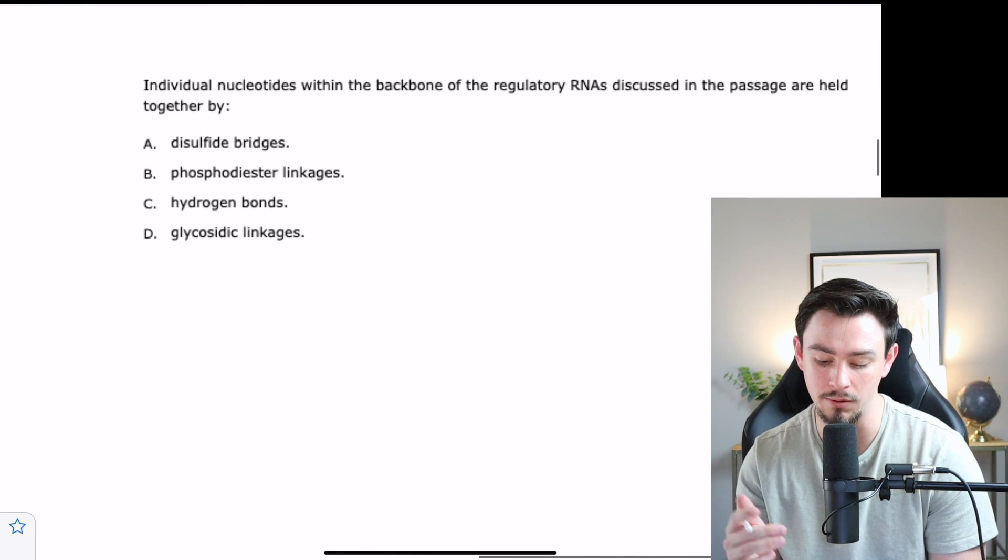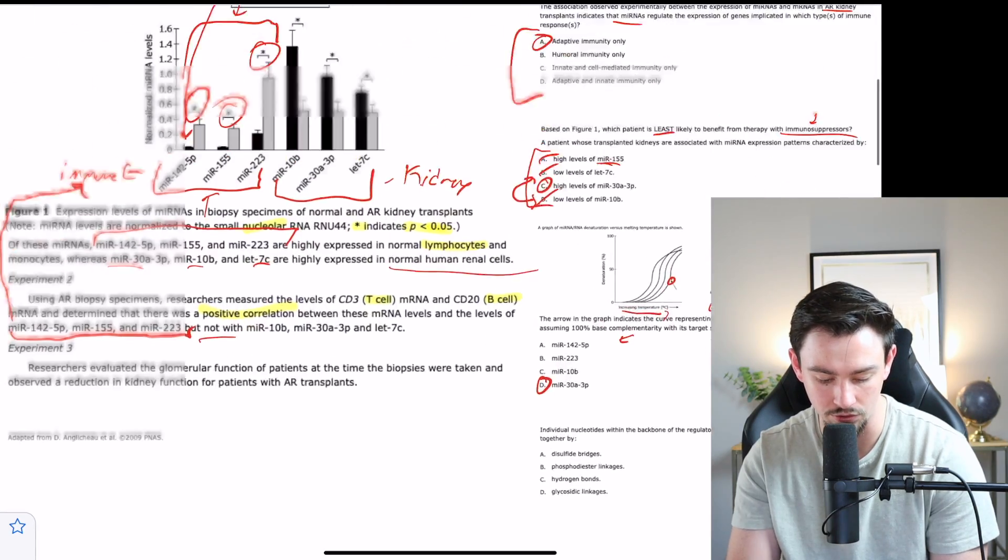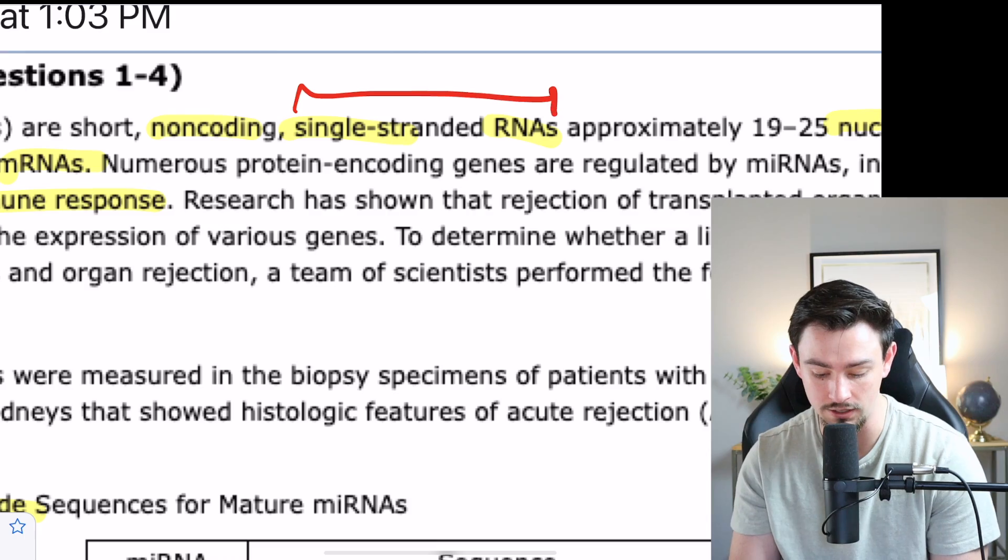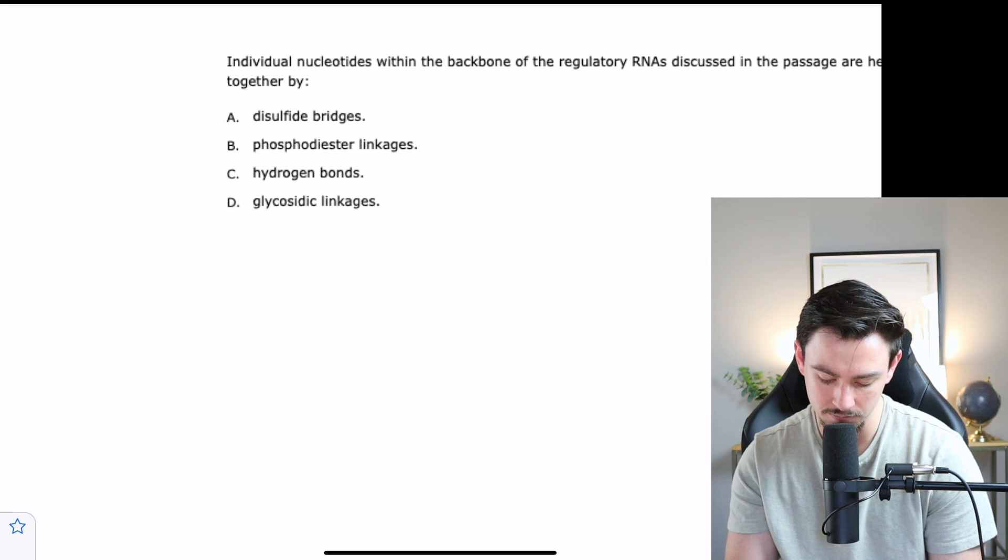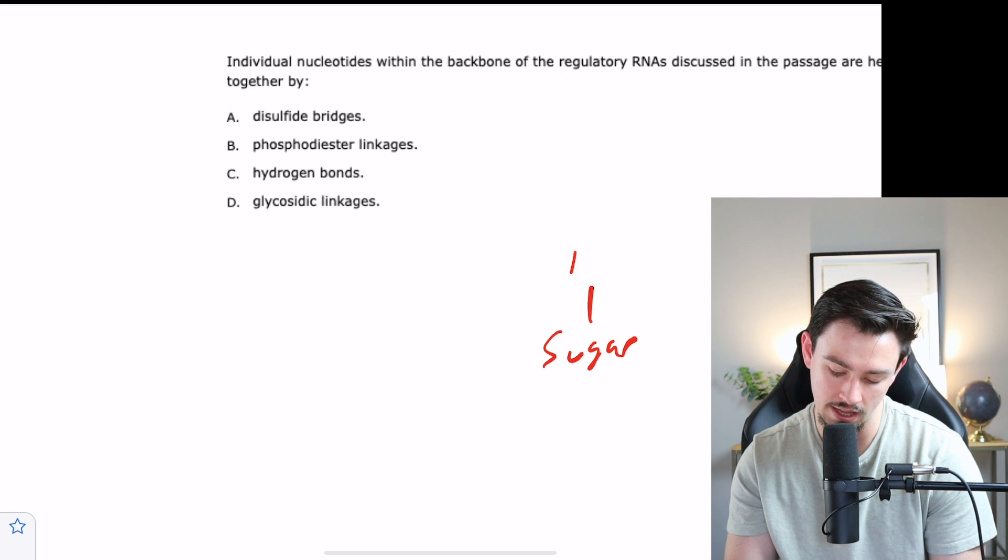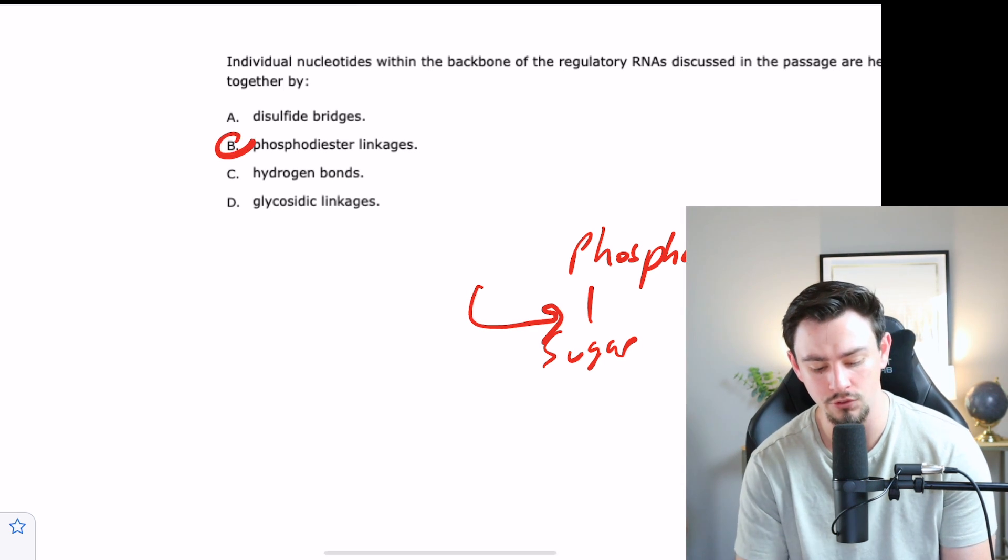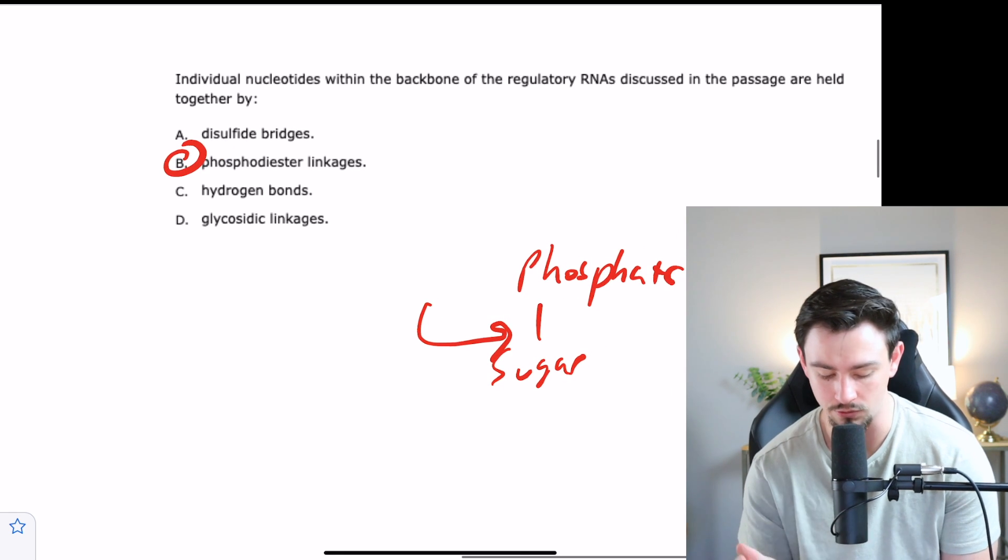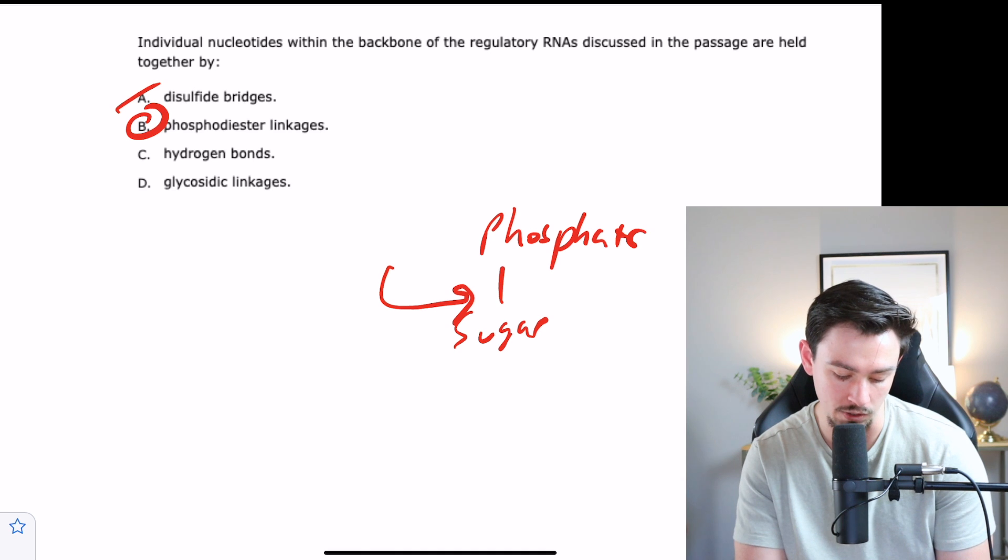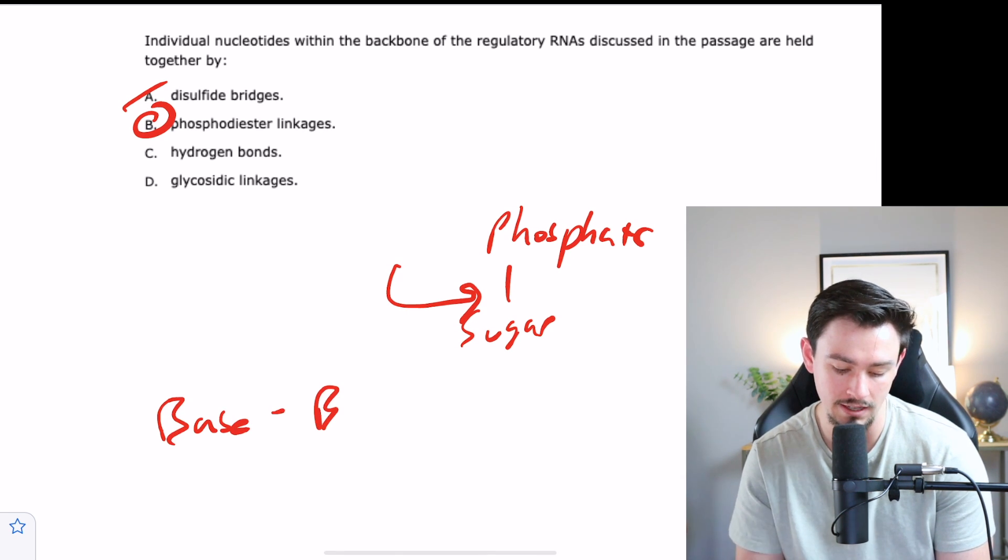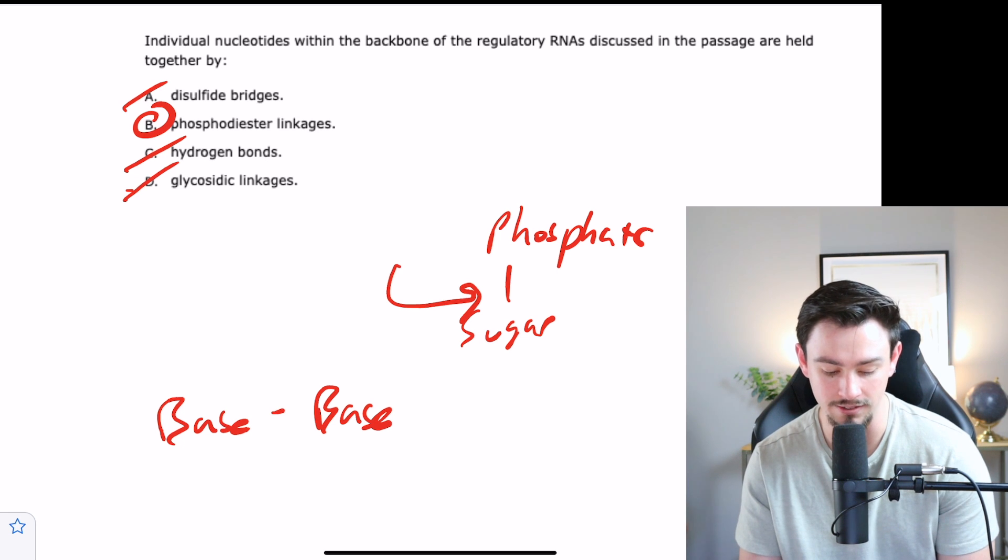Number four says: individual nucleotides within the backbone of the regulatory RNAs discussed in the passage are held together by what? At the very beginning, whenever we talked through the RNAs, we saw that they are single-stranded RNAs. If we're talking about what holds them together, we are talking about what's going to be holding together the sugar and the phosphate. And the name of that bond is what? The correct answer to that is B. Answer choice A, disulfide bridges. Remember that's between two sulfurs, so maybe not A. C is hydrogen bonds. You would probably pick this one if you thought we were talking about some kind of double-stranded molecule and the bond between bases and bases. So maybe not to C. D is a glycosidic linkage. That's just a linkage between several sugars. So that's not what we're talking about here. The correct answer is answer choice B.